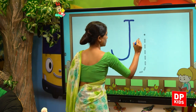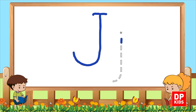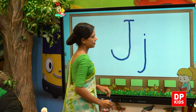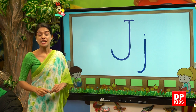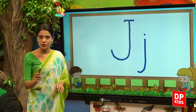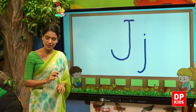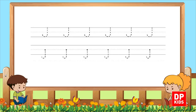We start here — a line straight, and then curve it at the bottom, and then a line on top which is the sleeping line. Then we have the simple J — smaller than capital J. Curve it, and the dot. Now we will write these letters on your writing book.